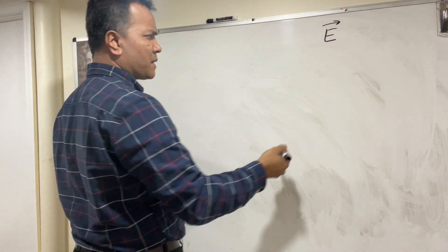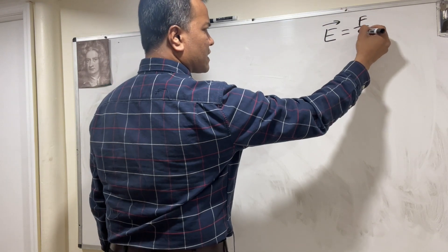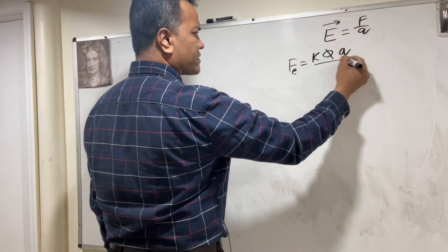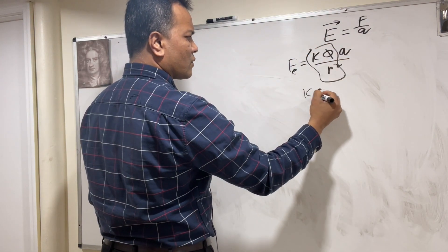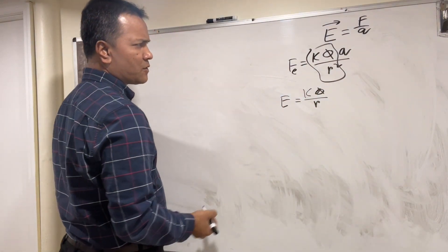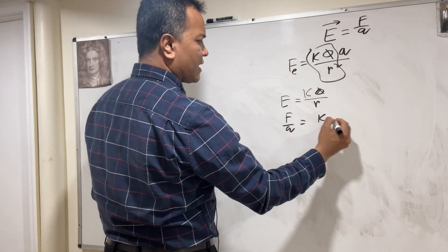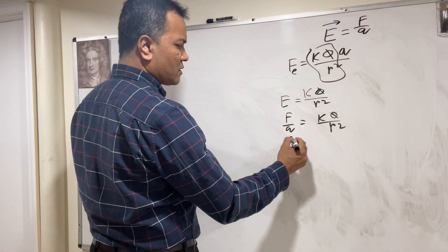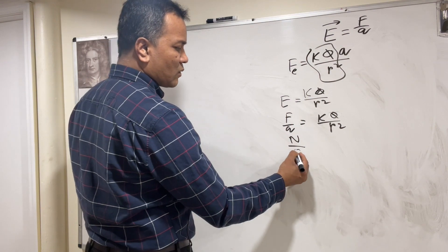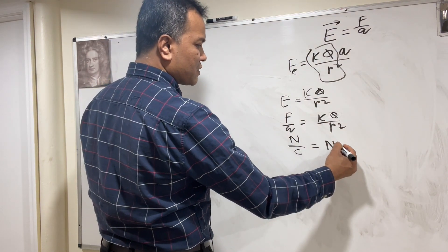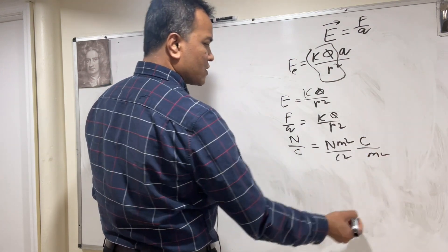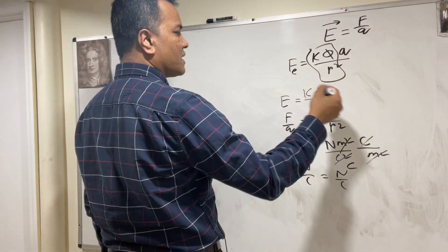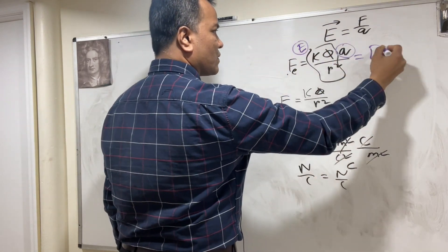The field idea was conceptualized by Michael Faraday. The electric field is E = F/q. We start with Coulomb's law: F = kQQ/r². Our hypothesis is that kQ/r² = E. Since E = F/q, we have F/q = kQ/r². Checking units: Newton over Coulomb equals k (N·m²/C²) times Coulomb divided by meter squared — Coulomb cancels leaving Newton over Coulomb. So kQ/r² = E, meaning F = Eq, and we have proved that.